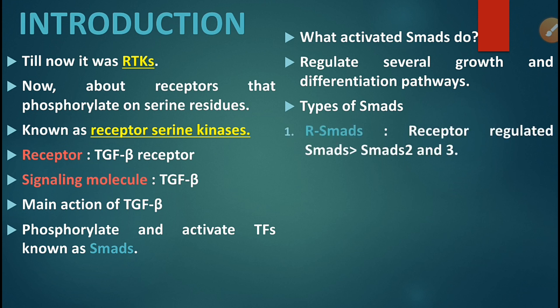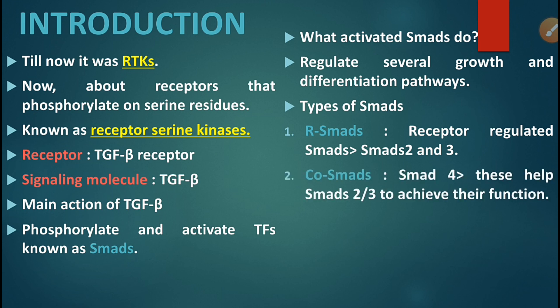There are three types of SMADs. The first type is the R-SMADs, or receptor-regulated SMADs, which are regulated by the receptor itself. There are two of them: SMAD 2 and SMAD 3. The second type is the Co-SMADs, for example SMAD 4. The function of Co-SMADs is to help SMAD 2 or 3 achieve their function.